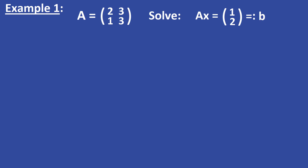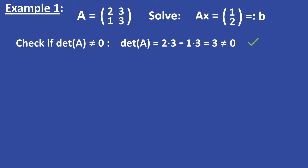Let's take a look at the following 2x2 matrix A. We want to solve the linear system A x equal to (1, 2). The matrix A needs to have a non-zero determinant, else the approach won't work. The determinant of A is equal to 2 times 3 minus 1 times 3, which is equal to 3, which is not equal to 0, so this is all right. The non-zero determinant also guarantees that the system is solvable.